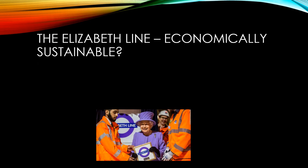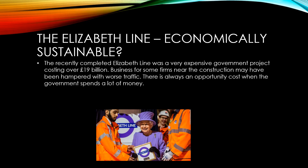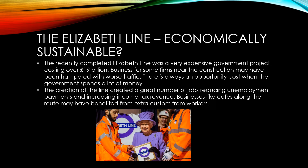Let's consider the economic sustainability of the recently completed Elizabeth line. The line came with quite a cost, coming in eventually at over 19 billion pounds. For some firms near the construction, they may have been hampered with worse traffic or problems getting people to come into their business while the area was in such a state. There's always an opportunity cost when the government spends a lot of money, and no doubt with this only affecting Londoners, people in the rest of the country may raise an eyebrow or two at the massive cost involved. The economic positives include increased labour mobility for people that live along the corridor where the line was built, as well as the great number of jobs that were created, reducing unemployment and increasing income tax revenue. Businesses like cafes along the route may also have benefited from extra custom from the workers that were building the line.